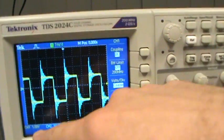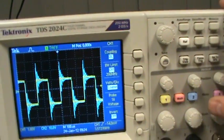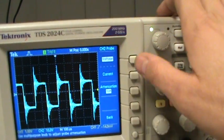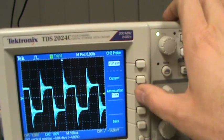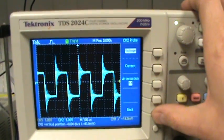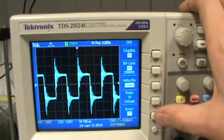And then now it says that we're reading 1 volt per division. Similarly for channel 2, we need to make our probe match what we have. So the attenuation is 1 time on our probe.